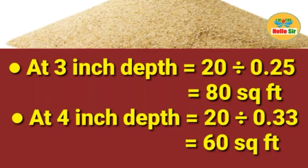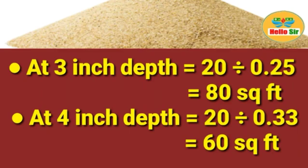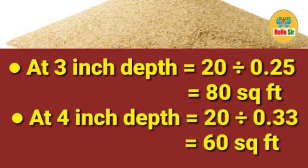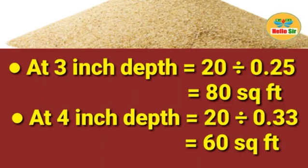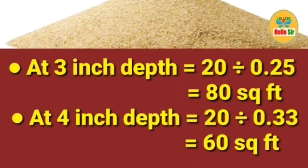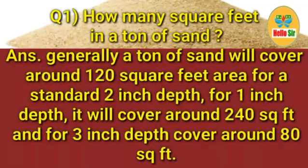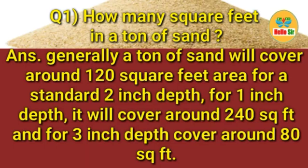At 3 inch depth: 20 divided by 0.25 equals 80 square feet. At 4 inch depth: 20 divided by 0.33 equals 60 square feet.